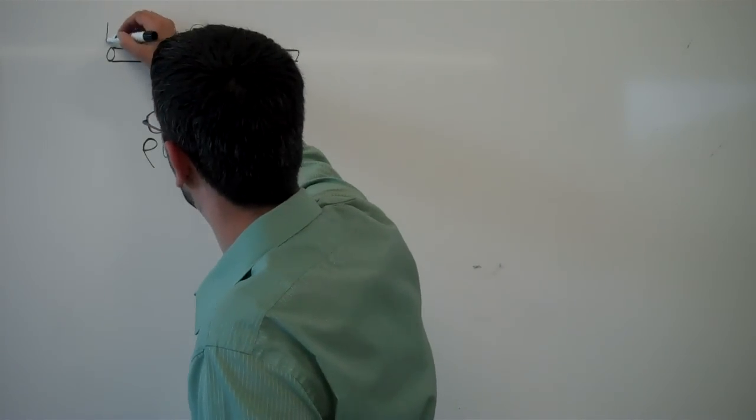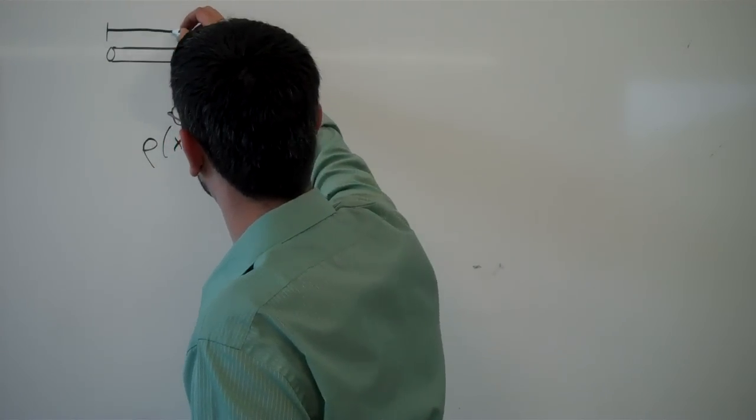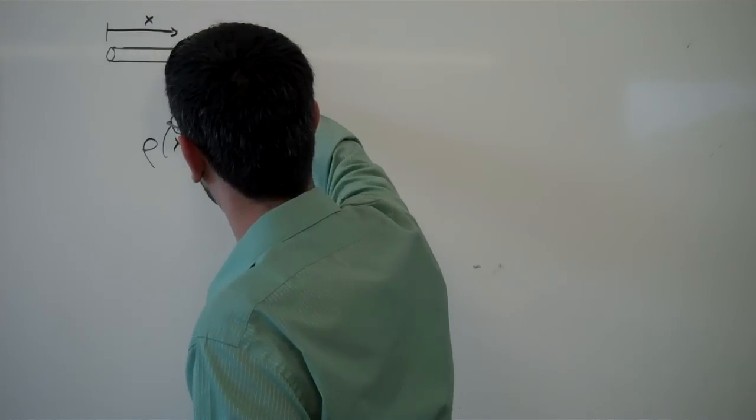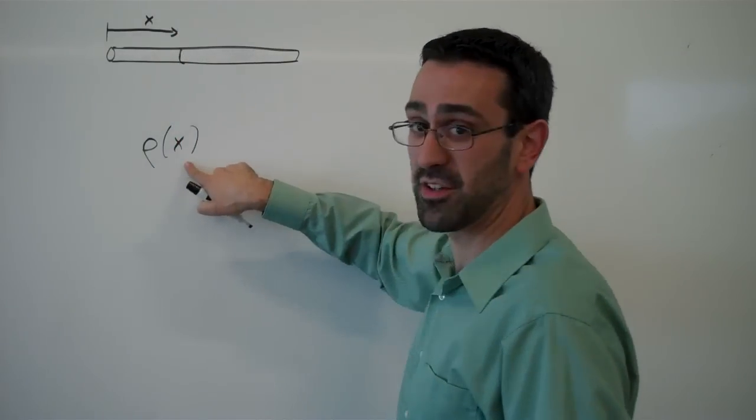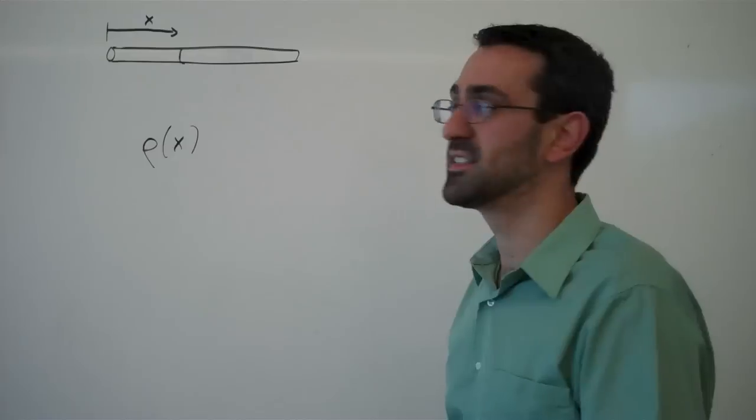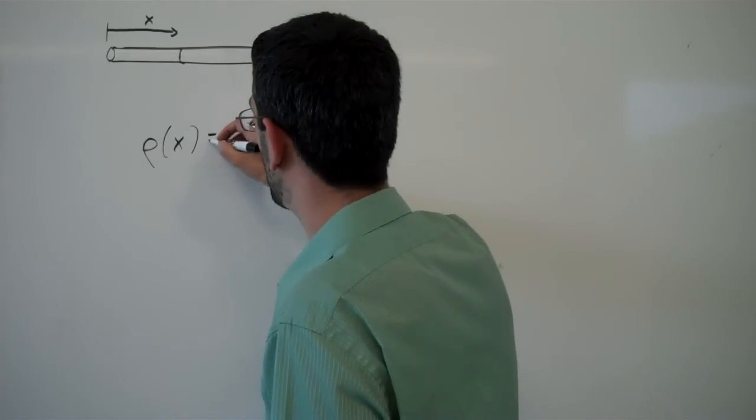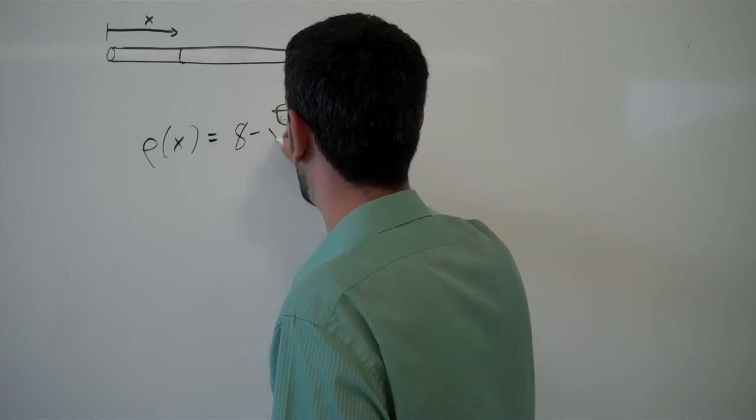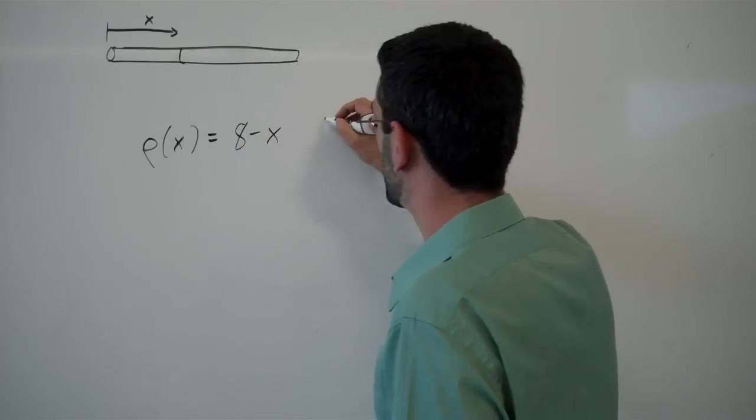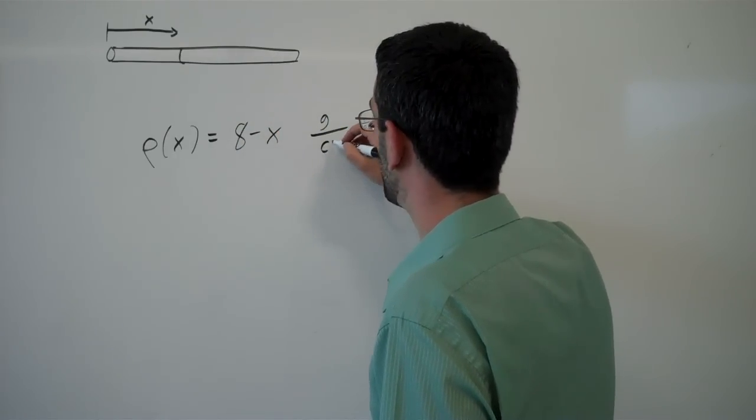For example, if this measurement is x, we're saying that at this point right here, at this x value, we know the density of the function. So maybe we know the density is 8 minus x grams per centimeter.